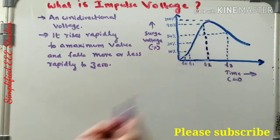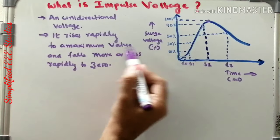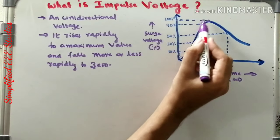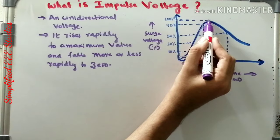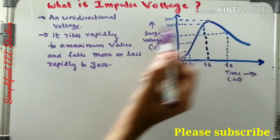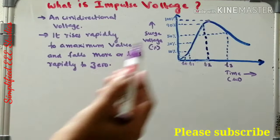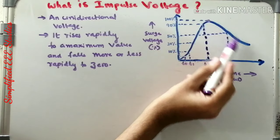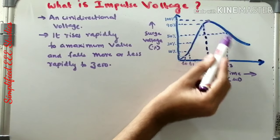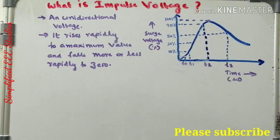This is one of the typical impulse voltage waveforms. It rises rapidly to a maximum value. As you can see, it rises till maximum value; thereafter the waveform is declining. It may be reaching to zero or may not be reaching to zero.